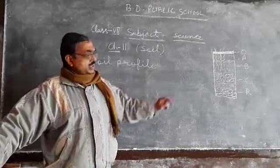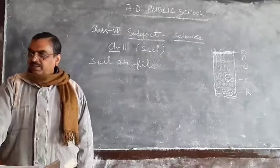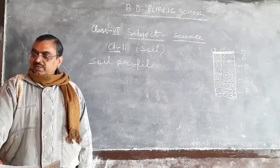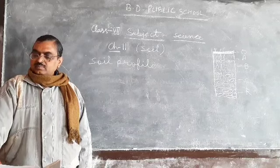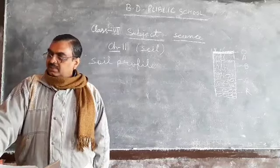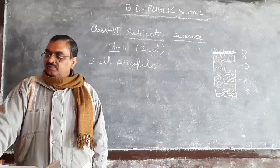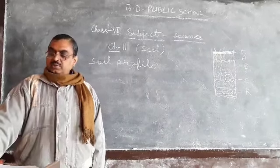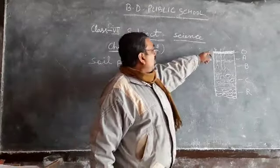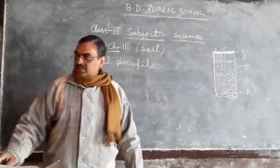The next layer is the B horizon, also called sub-soil — isme bhi mitti ki parat hoti hai. It contains clay and has a rich deposit of minerals. It receives rich mineral content from the layer above it — isme upar ki mitti ke mukabale adhik minerals hoti hain, aur isme paani bhi ruka rehta hai. It also contains compact fine particles of soil. Most plant roots reach only up to this layer — jaden A aur B, do layers tak aati hain, isse neeche nahin aa paatin.